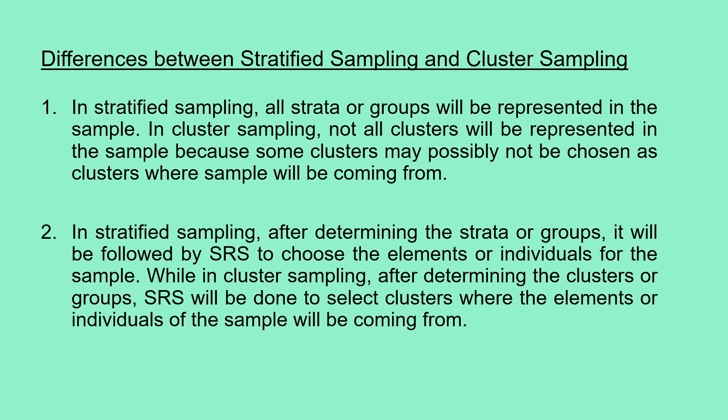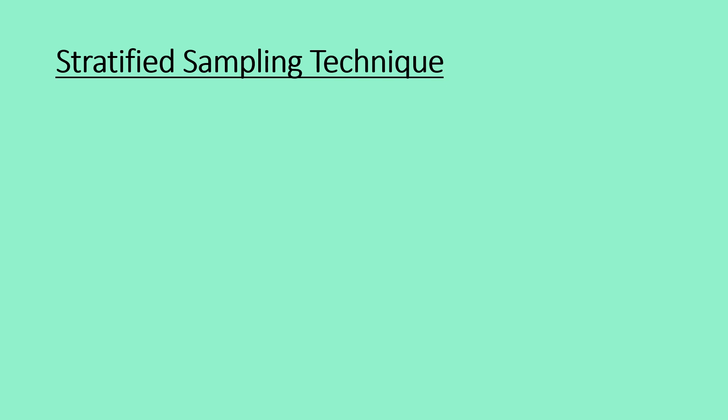While in cluster sampling, after determining the clusters or groups, SRS will be done to select the clusters where the elements or individuals of the sample will be coming from. The only similarity between these two types of probability sampling is that the individuals comprising the population will be grouped distinctively.